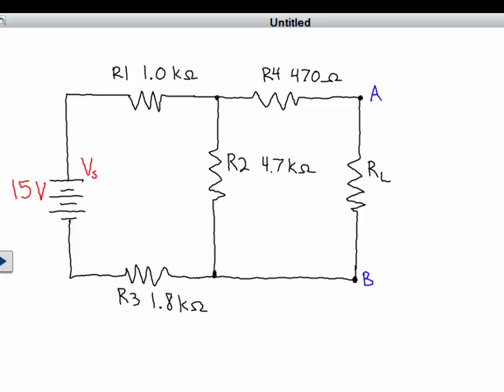In other words, from the point of view of the load, what would be the equivalent resistance of the circuit and what's the equivalent voltage? That's what a Thevenin equivalent circuit is. Basically, you can replace any complicated circuit with an equivalent circuit that is a single voltage source in series with a single resistance as measured from the output terminals A and B.